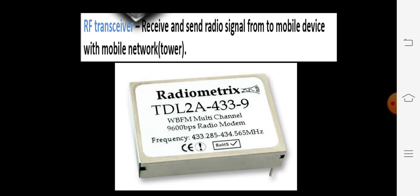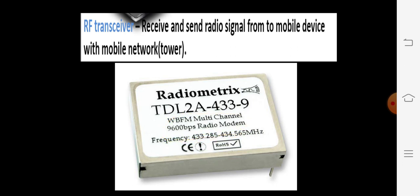So, who is responsible for transmitting signals or receiving signals? That is the RF Transceiver. One example of an RF Transceiver is the Radiometrics TDL2A433-9. Look at the modem speed it has given: 9600 BPS, that is bits per seconds.